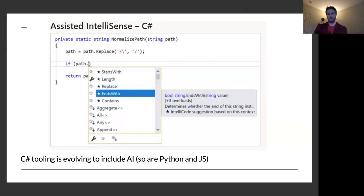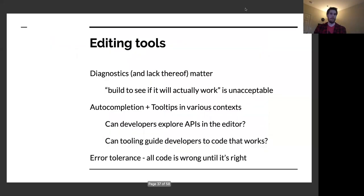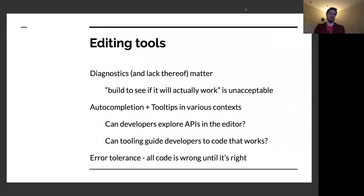Python and JavaScript are also getting this feature — it's called IntelliCode. This is where tooling is evolving today and will continue to evolve over the next 10 years. This is important to know because if we want to explore what better tooling means for functional programming languages, we have a lot to cover.